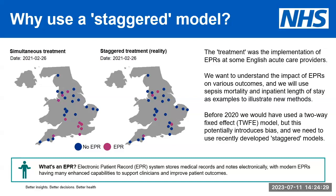One of the main benefits of this approach is that we have a really nice control and treatment group. Our control group are providers that have never had an EPR, and our treatment group are providers that have never had an EPR and then within this time period have implemented one — which creates a nice clean counterfactual to compare against when we do our difference-in-differences modelling.